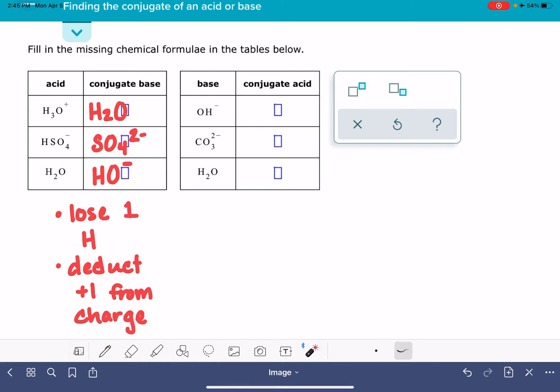Now, if we're starting with a base and we're being asked to write the conjugate acid, we're basically going to do the opposite of all of these things. So that means that we want to add one hydrogen atom to the formula, and also we need to increase our charge by plus one.